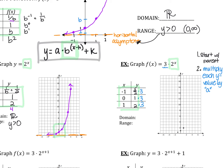Multiplying everything by a = 3, starting from the parent function values of (negative 1, 1/2), (0, 1), (1, 2), I multiply every y-value by 3 and get 3 halves, 3, and 6. Then I graph x with the new y-values: negative 1 with 3 halves (which is 1.5), 0 with 3, and 1 with 6.